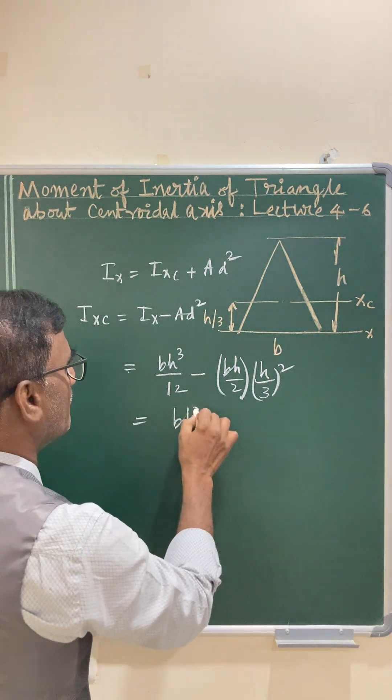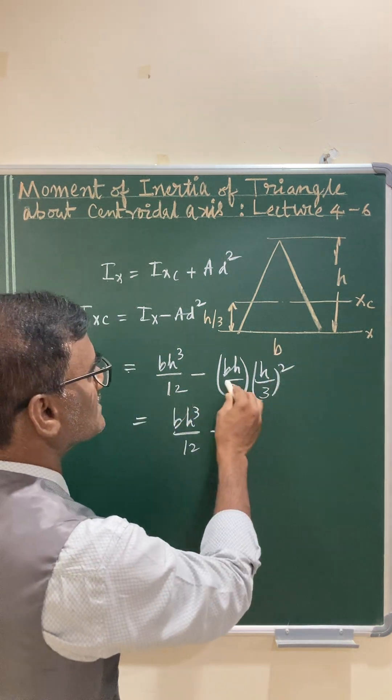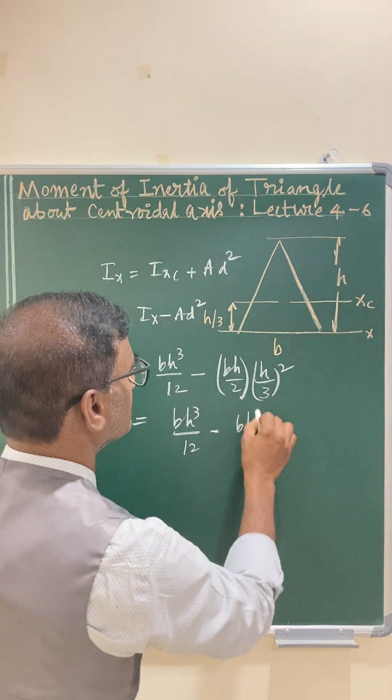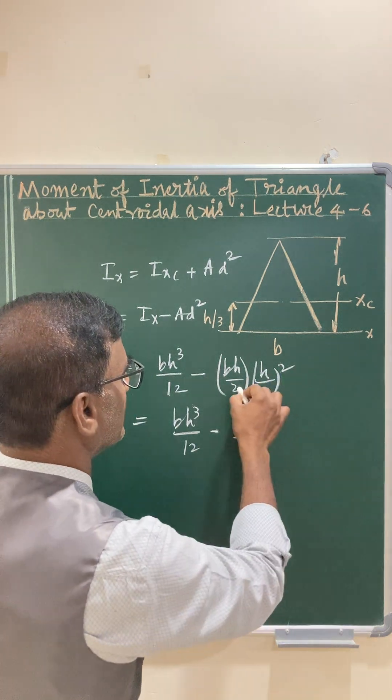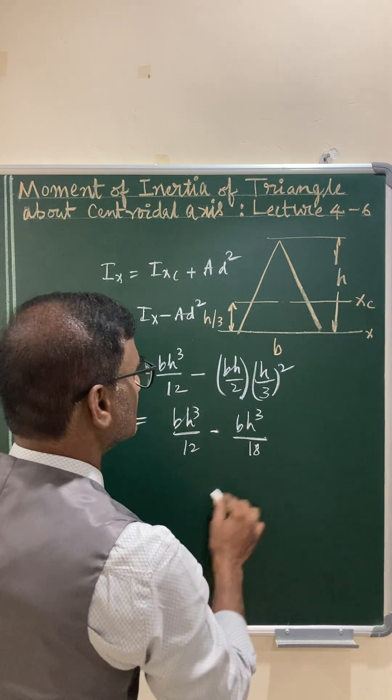This is bh³/12 minus this becomes bh³/18, where 9 times 2 equals 18.